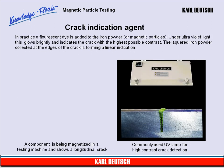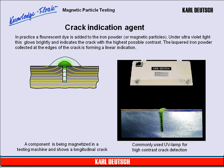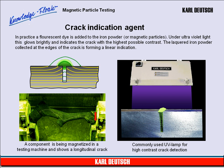Crack Indication Agent. In practice, a fluorescent dye is added to the iron powder, or magnetic particles. Under ultraviolet light, this glows brightly and indicates the crack with the highest possible contrast. The lacquered iron powder, collected at the edges of the crack, forms a linear indication. Visual testing with ultraviolet light is familiar from banks, where it is used to detect counterfeit money bills. The picture at the bottom left shows a component being magnetized in a testing machine, revealing a longitudinal crack running along the piece. The picture on the right shows a commonly used UV lamp for high-contrast crack detection.